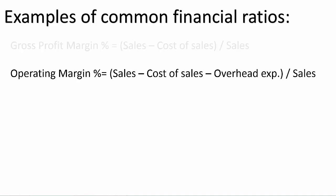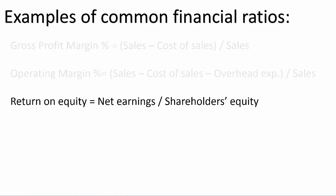Operating margin, which is the amount of profit you generate after paying all of your overhead, divided by your sales, and expressed as a percentage. Return on equity, which is the net income divided by the balance of shareholders' equity, expressed as a percentage.